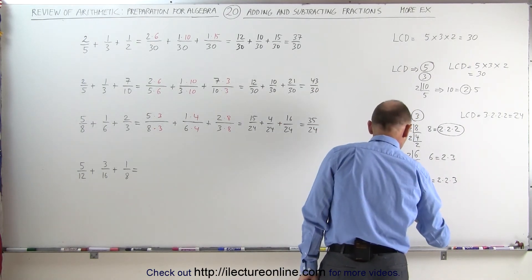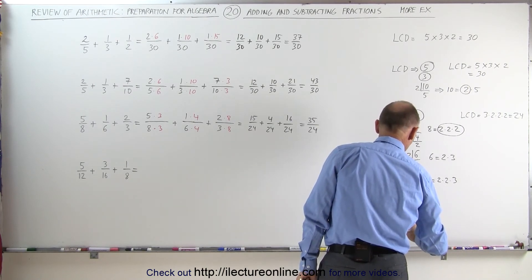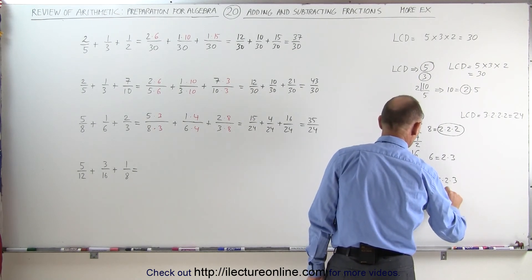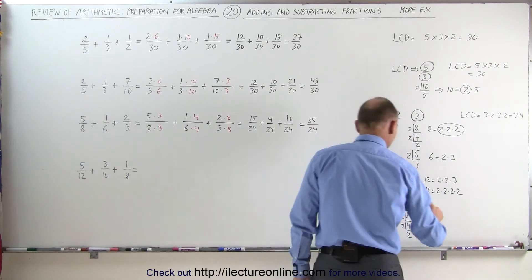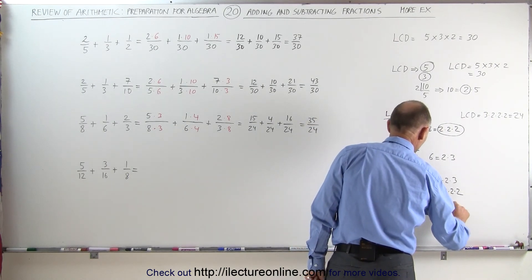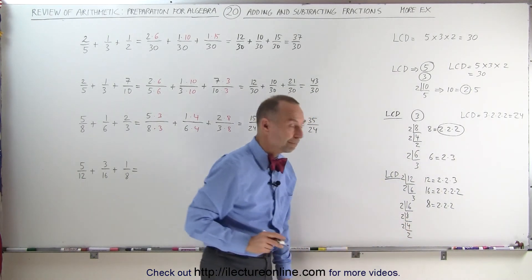We have 16, which can be divided by 2 to give 8, divided by 2 to give 4, divided by 2 to give 2, which means that 16 can be written as 2 times 2 times 2 times 2. And finally, the number 8 can be written as 2 times 2 times 2.